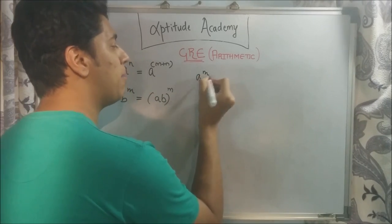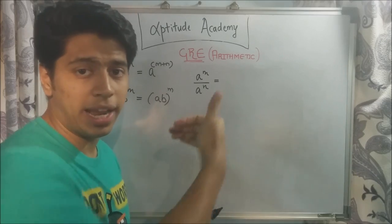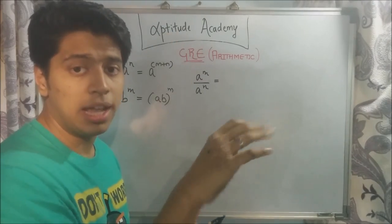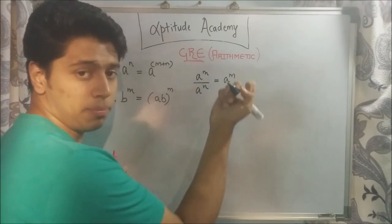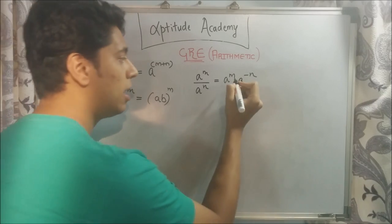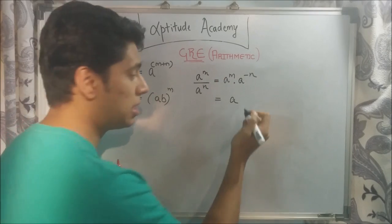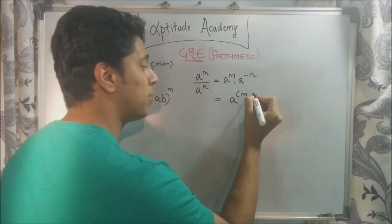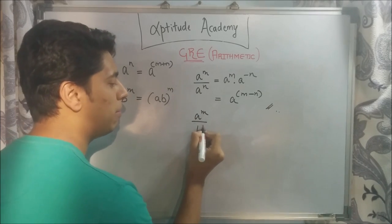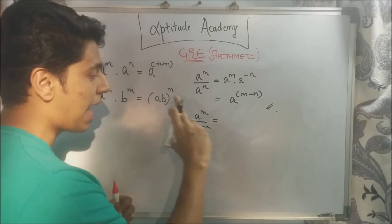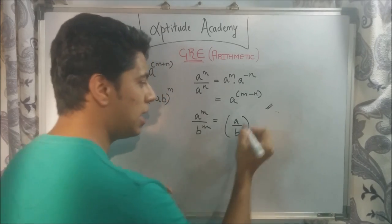Suppose you get A raised to m divided by A raised to n. Since a negative exponent can be brought up to the numerator, this becomes A raised to m into A raised to minus n. The bases are the same, so retain the base and add the powers: m plus minus n equals m minus n, giving A raised to m minus n. Similarly, A raised to m divided by B raised to m: carry out the division with the bases and retain the power, giving A by B, all raised to m.